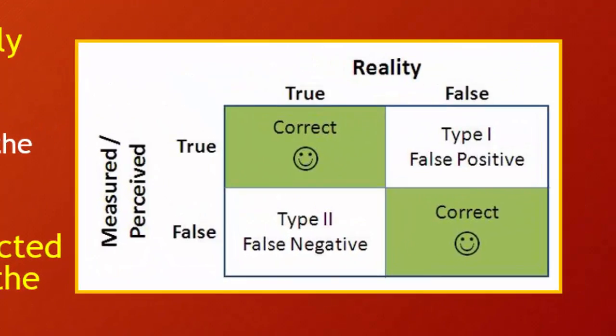There are two scenarios where we're fine: if we claim we should reject the null and in fact we should have rejected it, we're correct; and if we fail to reject the null and we should have failed to reject it, we're also correct. But because we're working in sample world, we always risk the probability of making a type 1 or a type 2 error, depending on which decision we make about our hypothesis and the null.